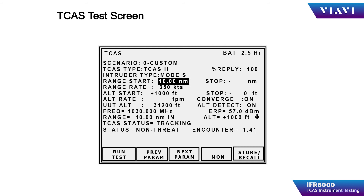You should observe the range decreasing and the altitude changing as prescribed by the scenario setup. The measured parameters of the TCAS processor are displayed in the lower half of the screen. As the scenario progresses, the TCAS processor should display the target at the approximate distance as displayed on the IFR 6000 and at the approximate heading the IFR test set and antenna are set in relation to the aircraft.